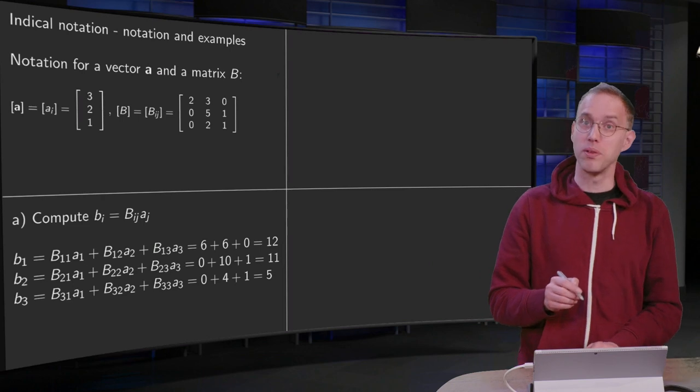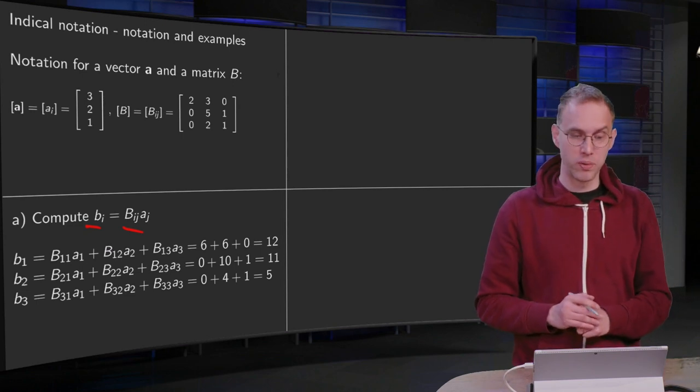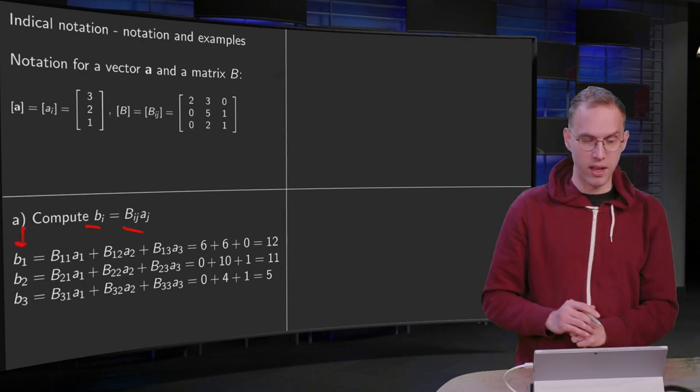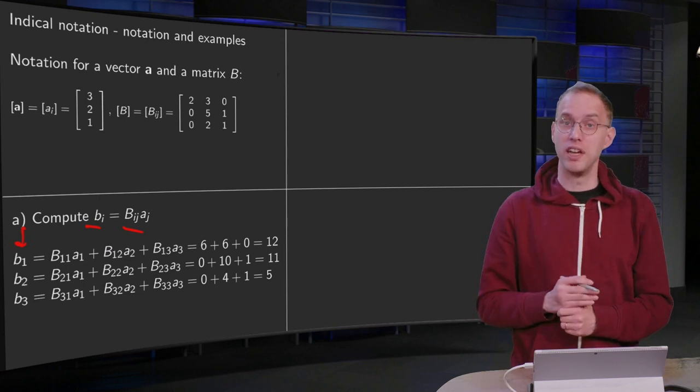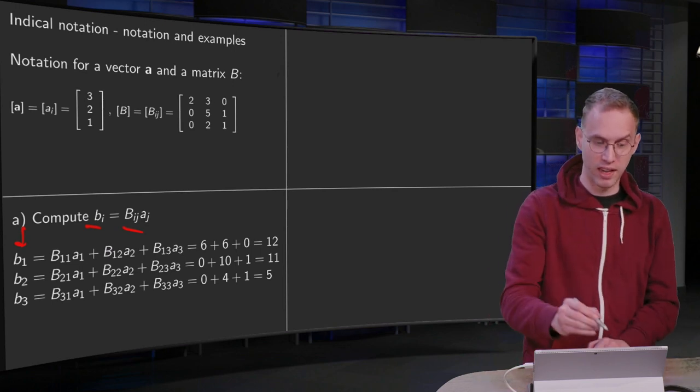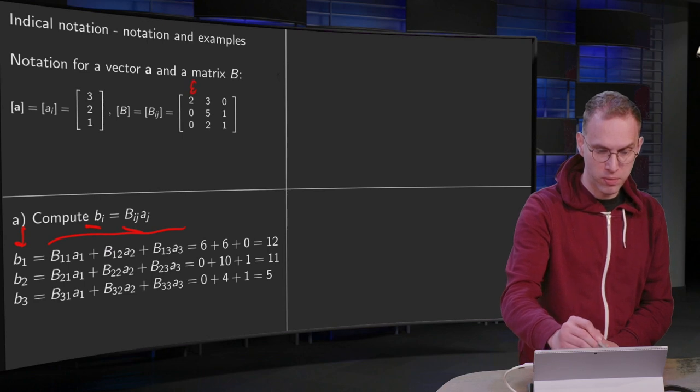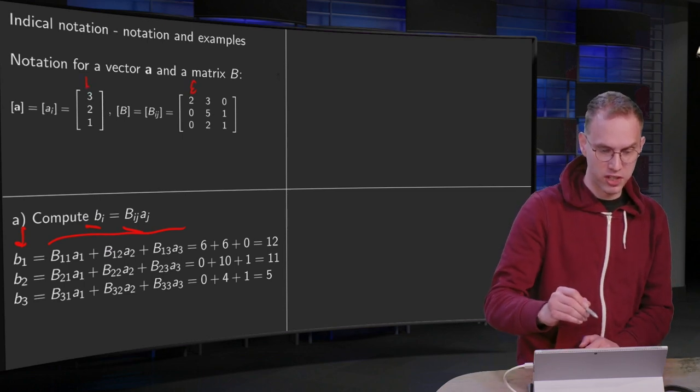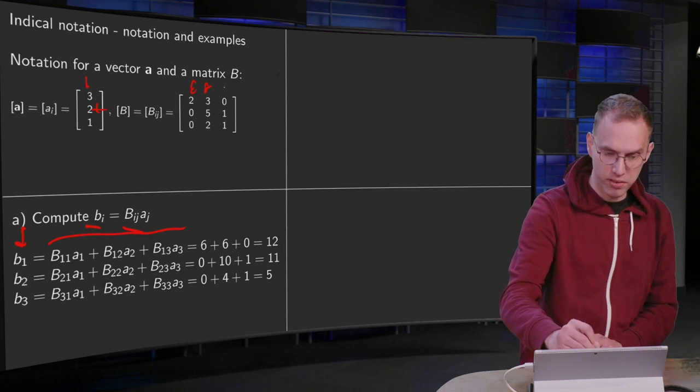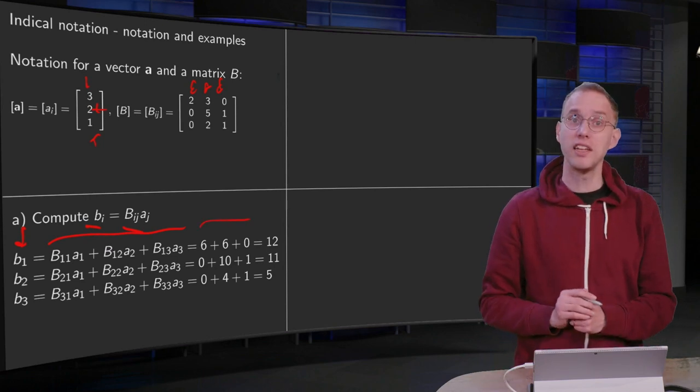Now let's do some computations. For example, from a, compute bi equals bij aj. So we have a free index, so we have a b1, b2, and b3. What do we have for our b1? Then i equals 1, and we have to sum j from 1 to 3. So we get b11 a1 plus b12 a2 plus b13 a3. That's this expression over here. And let's see what they are. b11 equals 2 times a1 equals 3, so 2 times 3 equals 6. b12 equals 3 times a2 equals 2, so that's 6. And b13 equals 0 times a3 equals 1, so you get 0. So 6 plus 6 equals 12.